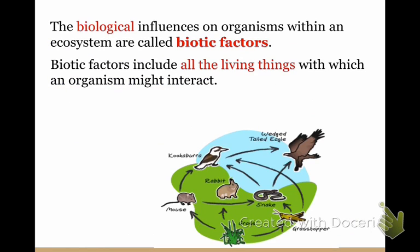The biological influences on organisms within an ecosystem are called the biotic factors. Biotic factors include all the living things with which an organism might interact — so what eats that animal, what does the animal eat, and is there competition between two different animals for the same water or the same food?